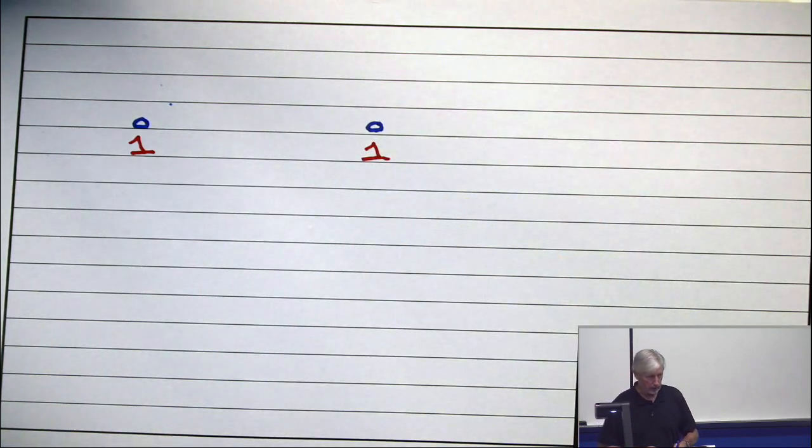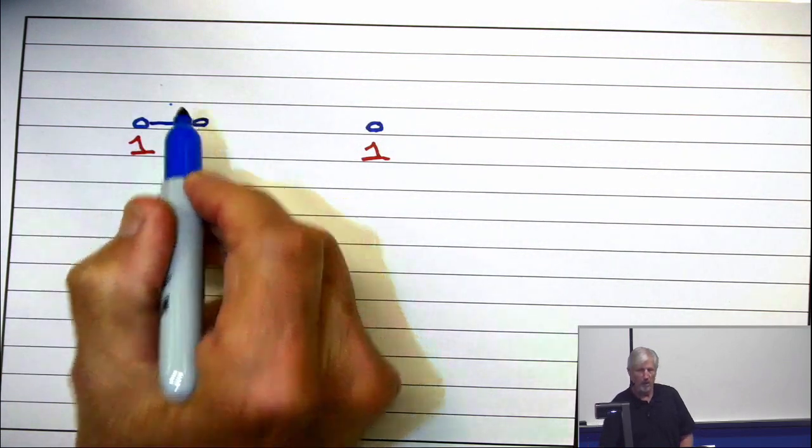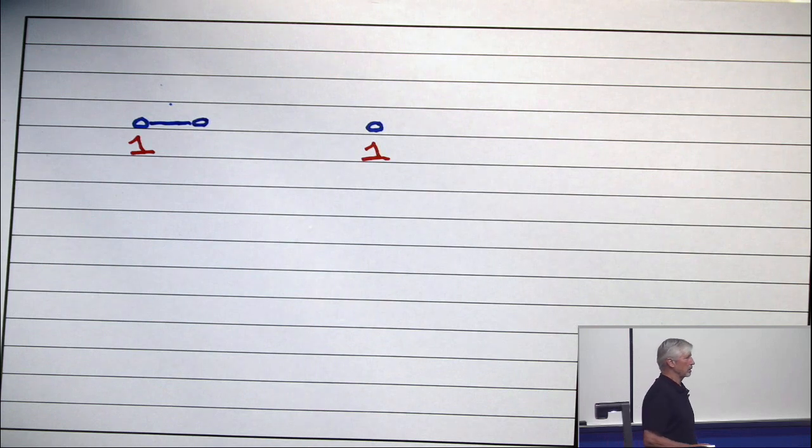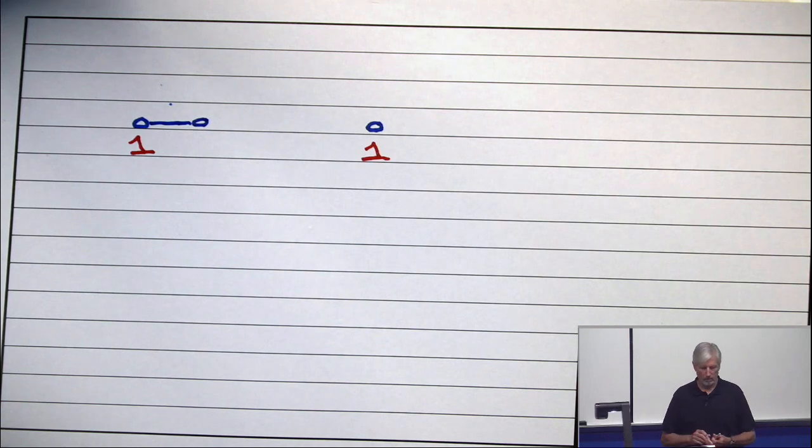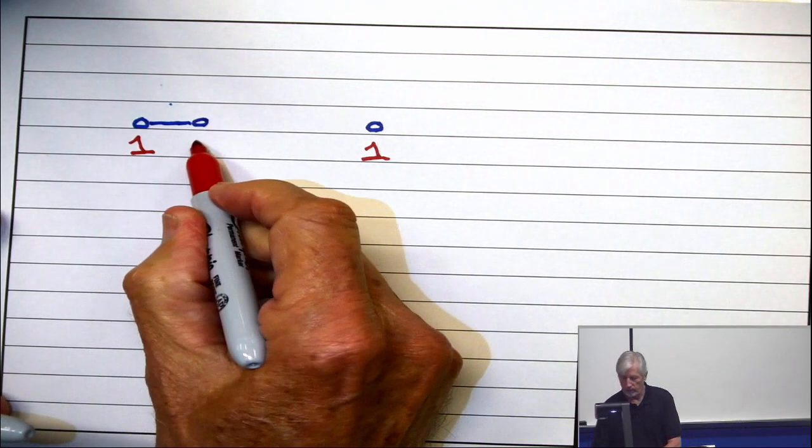Now I give you another vertex. And I say this one is adjacent to the first one, but not the second one. If you're using FirstFit, what color would you give it? You give it two.